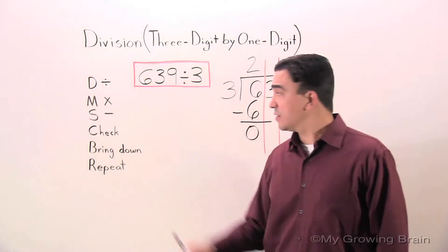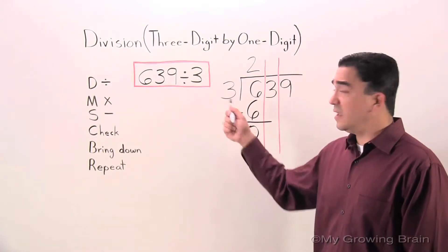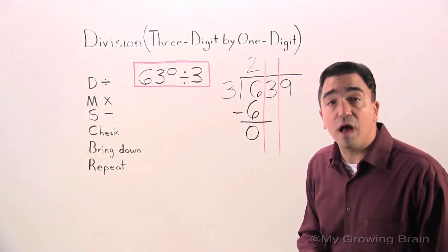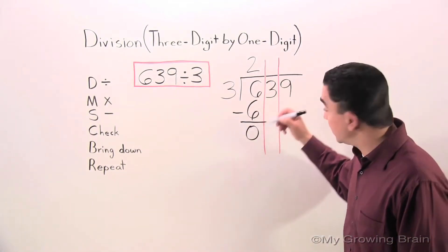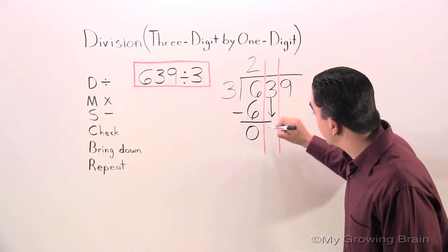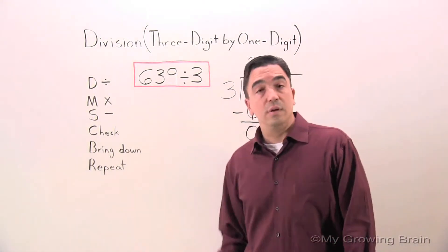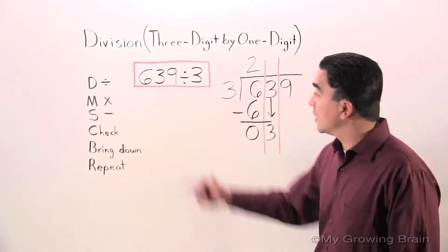I'm going to check it. 0 is less than the divisor, so I'm going to keep on going. Bring down. Bring down the 3. Repeat the whole process.